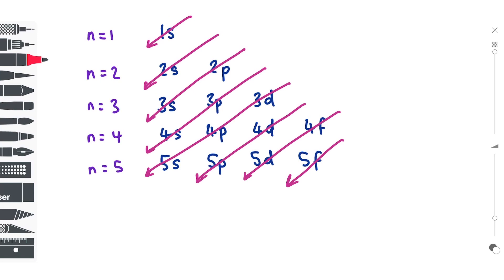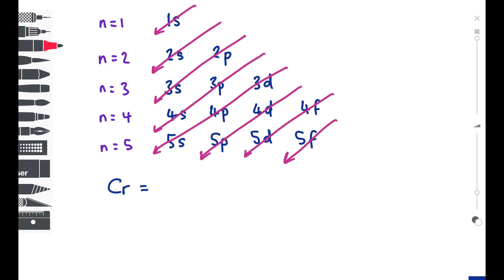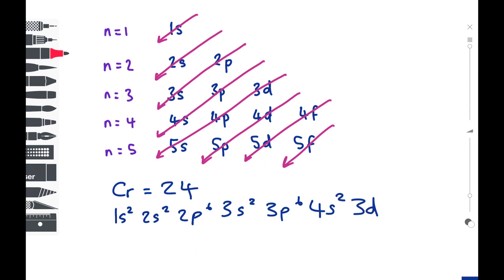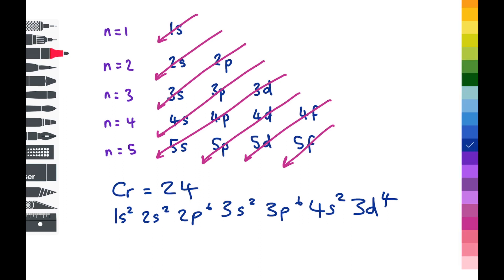We do need to know some exceptions to this rule — there are only two you need to know about: chromium and copper. Let's look at chromium first. Using the periodic table it has an atomic number of 24, meaning 24 electrons. According to the diagram, we would write the electronic configuration following the arrows, which gives us: 1s², 2s², 2p⁶, 3s², 3p⁶, 4s², and counting up — 2+2=4, +6=10, +2=12, +6=18, +2=20 — we're trying to reach 24, which is why we would imagine it would be 3d⁴.